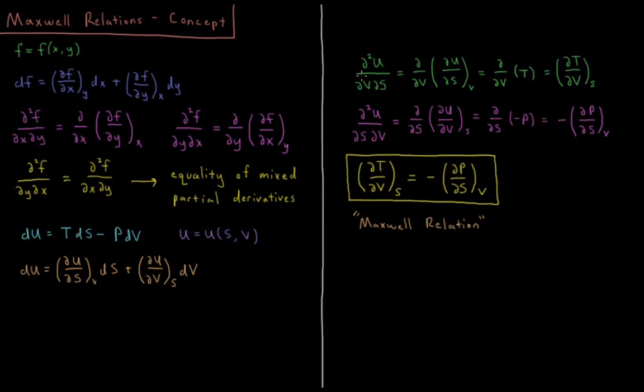So if we take the second derivatives here, d²u/dVdS equals d/dV of du/dS. We saw that du/dS equals the temperature when you compare the structure of these two equations. We also saw that in our previous video on natural variables. So d²u/dVdS equals d/dV of T, or dT/dV at constant S.